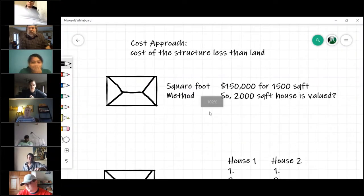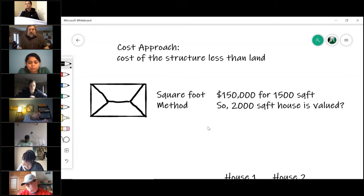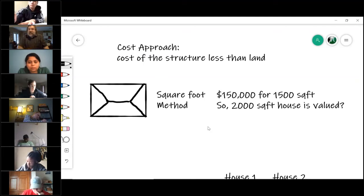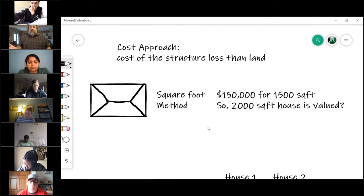The first thing we need to understand with the cost approach is it only deals with the structure. You have to subtract the value of the land out of the equation. If you look at our tax property card, it will give you a value of the structure and the value of the land and then the total. We are only going to be talking about the cost of the structure itself - that's the most important part. You literally would just subtract it out. If the house is valued at $350 and the land's worth $50, then the structure's worth $300,000. That is what we are going to talk about.